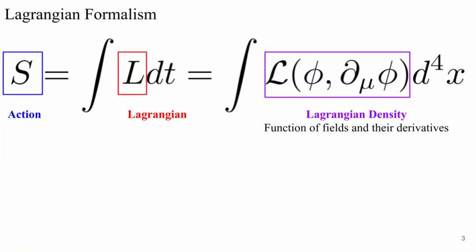First, defining some of the formalism that Peskin and Schroeder use, we have the action denoted by S, which is a time derivative of the Lagrangian, and the Lagrangian can be denoted as the spatial derivative of the Lagrangian density.